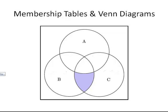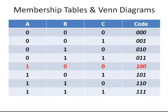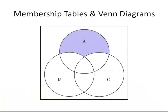Next we have 1, 0, 0 — that is part of A but not part of B and not part of C. It is up at the top there. It is just like the two single-set regions we have seen previously.